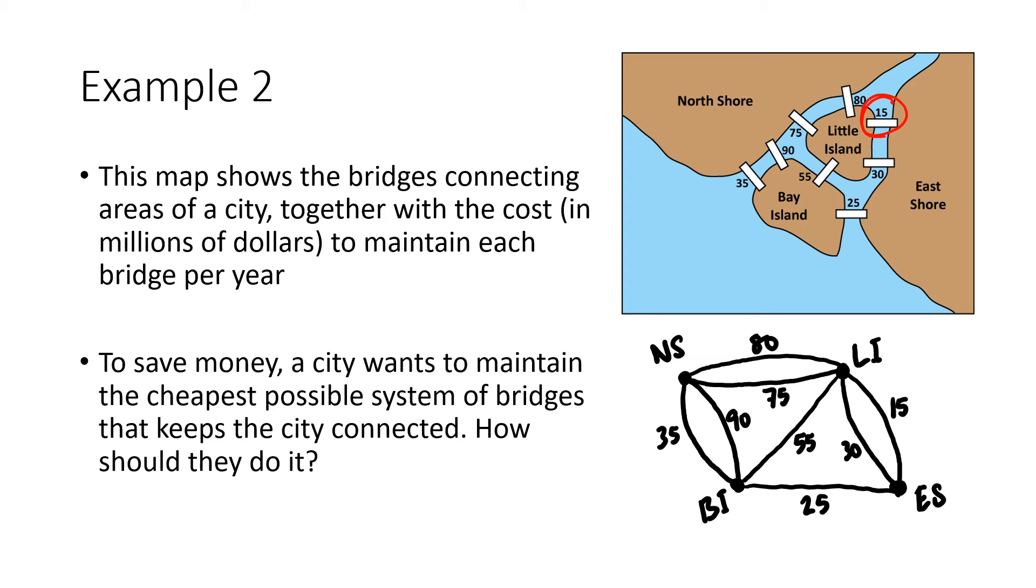The cheapest bridge is 15 connecting Little Island to East Shore, so that becomes part of my network. Next is 25 connecting Bay Island to East Shore. The next lowest is 30 connecting Little Island to East Shore, but they're already connected, so I'll cross that out. Next is 35 connecting North Shore to Bay Island. Now I'm done because every land mass is connected to the network.